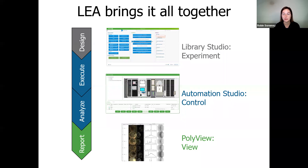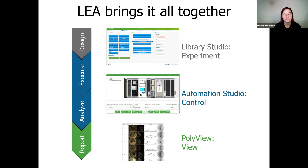Automation Studio is the next step — it's the brains behind your Big Kahuna or Junior. It controls the experiments, controls the hardware, executes experiments, and previews incoming data as the experiment goes on. This is where a bulk of the changes were made in LEA 10. Finally, once your experiments are completed, viewing and analyzing your data is a priority. We have a few data analysis options: PolyView for custom reporting, a LEA analysis plugin for Excel, and with LEA 10 we're going to talk about a new data viewing tool as well.